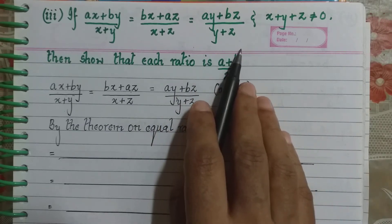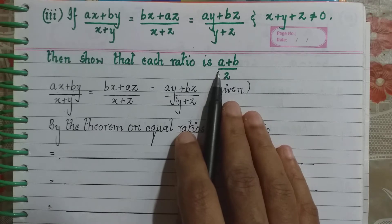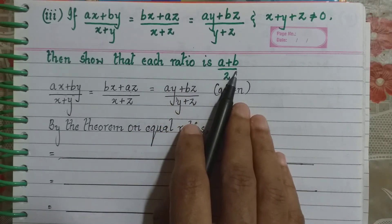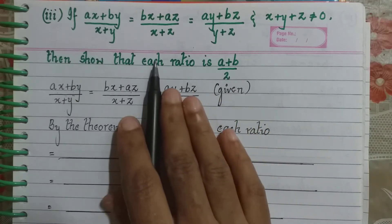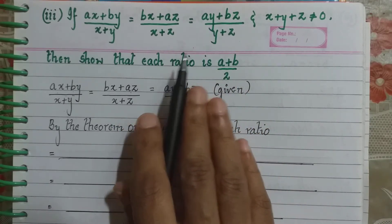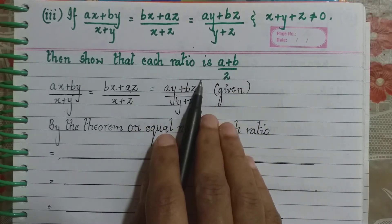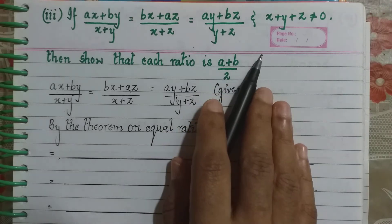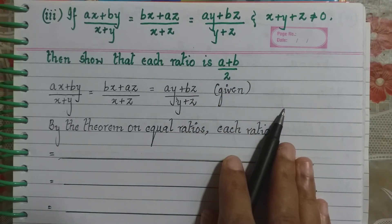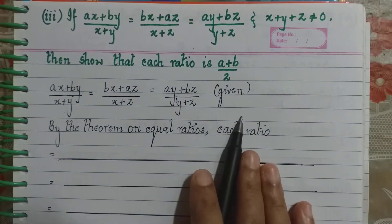So the numerator is (X + Y + Z)(A + B) and the denominator is (X + Y + Z) × 2. The (X + Y + Z) terms cancel, leaving A + B in the numerator and 2 in the denominator. So we get (A + B)/2. Isn't it simple?